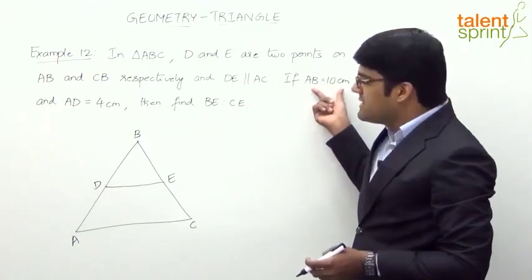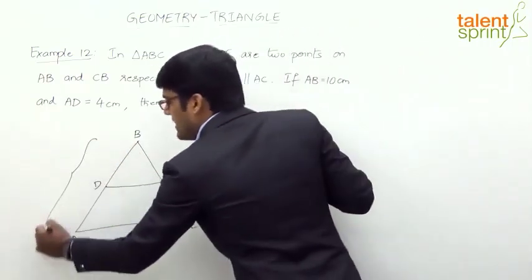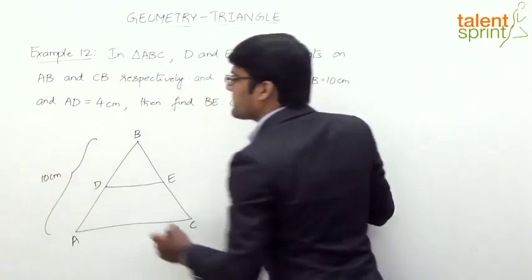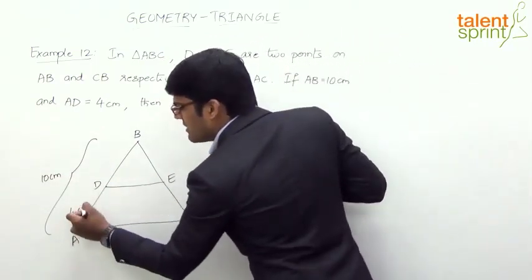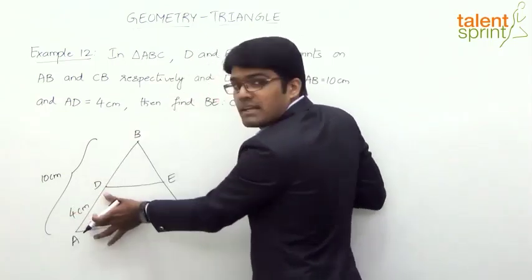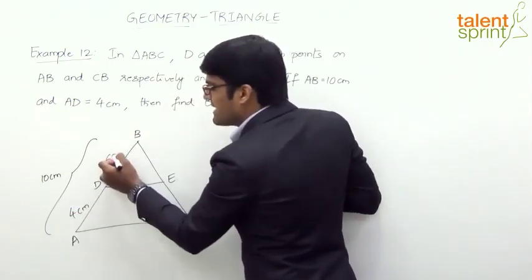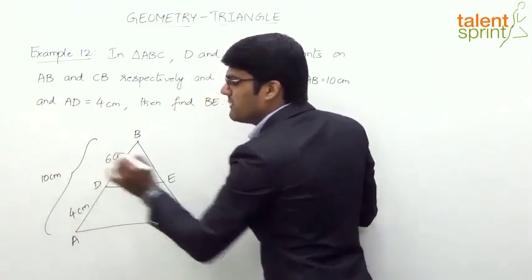Now the next part of the question says AB is equal to 10 cm. This total AB is 10 cm and AD is 4 cm. This part is 4 cm. That is obvious that if the total length is 10 and this part is 4, the remaining part should be 6 cm. 4 plus 6 will give us 10.